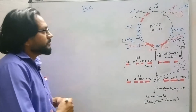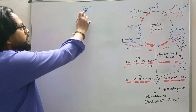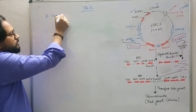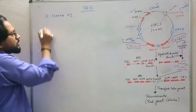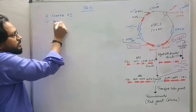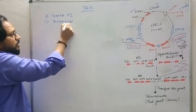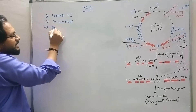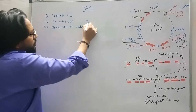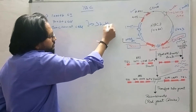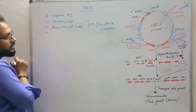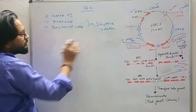Hello friends, I wish you will be growing and fine. Today we will study the yeast artificial chromosome vector. It has a capacity to clone 1000 KB of gene of interest. It can clone the gene in a yeast cell, and it can also replicate in a bacterial cell. So we can call it a shuttle vector as well.